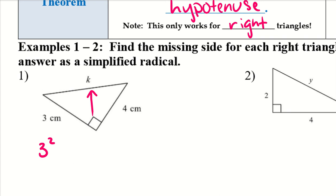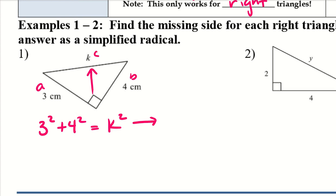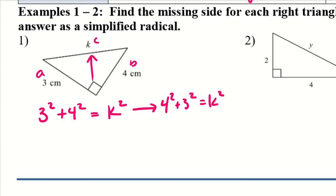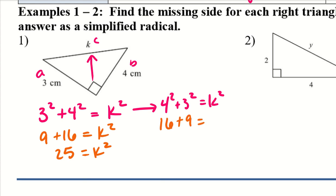I'm going to draw an arrow opposite my 90-degree angle — so I have K there. I can do 3 squared plus 4 squared equals K squared, where 3 is A, 4 is B, and K is C. If you wrote 4 squared plus 3 squared equals K squared instead, that gives the same result. 3 squared is 9, plus 4 squared is 16, equals K squared, giving 25 equals K squared. Both orders give 25 equals K squared.